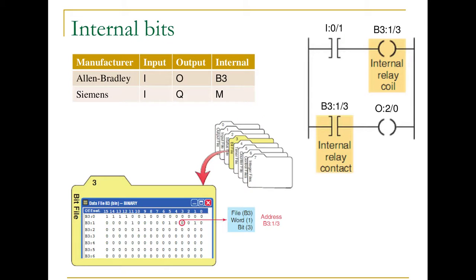This video goes into a little bit more depth on the topics of latching and sealing in a circuit. In order to seal in, it's often useful to employ internal memory bits — memory locations that aren't associated with physical inputs or physical outputs. For Allen Bradley, they're referred to with B, and for Siemens, it's M.